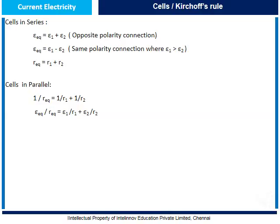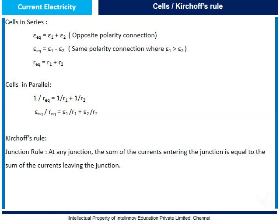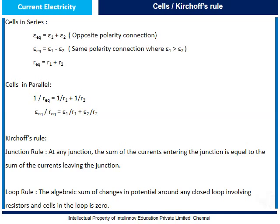Now let us understand Kirchhoff's rules. There are two rules: the junction rule and the loop rule. The junction rule states that at any junction, the sum of currents entering the junction equals the sum of currents leaving the junction. As per the loop rule, the algebraic sum of changes in potential around any closed loop involving resistors and cells is zero.